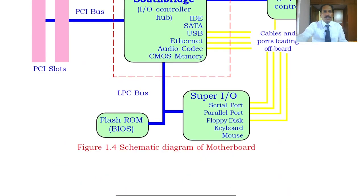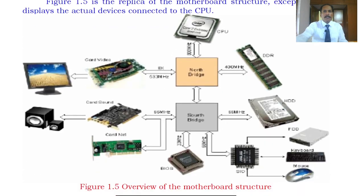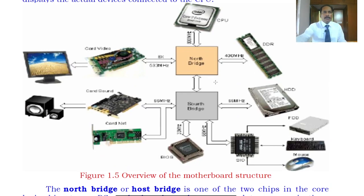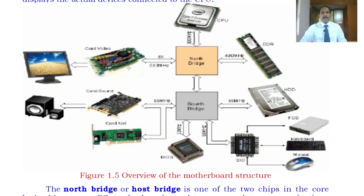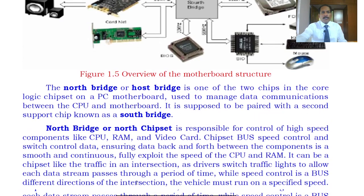This is the general structure of the motherboard. Looking at the diagram, you can see all components: monitors connected via the graphic card, the hard disk, the CPU processor, DDR RAM, USB devices, speakers, BIOS, and keyboard and mouse connectors. All slow devices are connected to the South Bridge, and all high-speed devices — including the graphic card which supports monitors — are connected to the North Bridge. This is the actual North Bridge and South Bridge explanation.